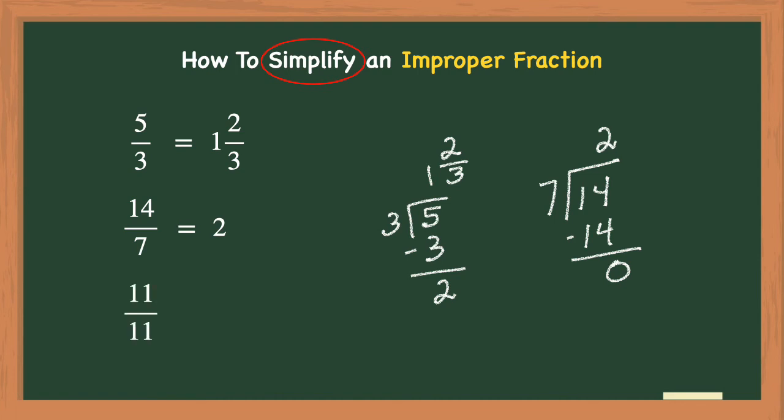One more — eleven-elevenths. That fraction bar means I'm going to divide, so 11 divided by 11 is one with zero remainder. So eleven-elevenths reduces to the whole number one. As you can see, five-thirds, fourteen-sevenths, and eleven-elevenths all simplified to either a mixed number or a whole number.